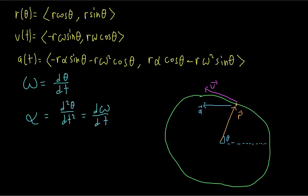The two components are the centripetal acceleration and the tangential acceleration. The centripetal acceleration is what's changing the direction of the velocity vector, and it's always pointing towards the center of the circle — it's what you have in uniform circular motion. The tangential acceleration is the extra component you get in non-uniform circular motion; it's tangent to the circle, pointing in the same direction as the velocity vector. The centripetal acceleration is in the same direction as the position vector, just in the opposite direction.